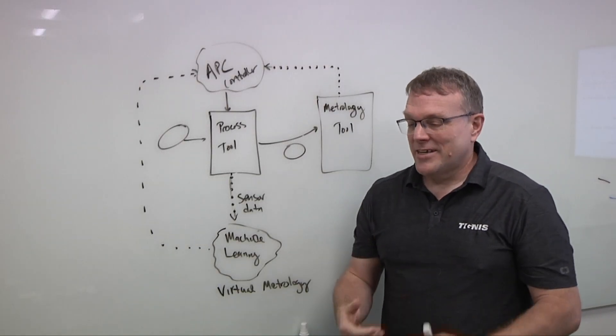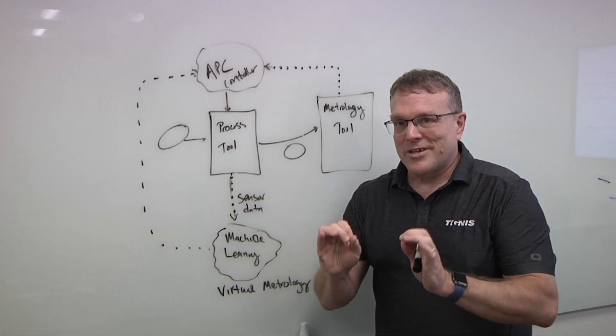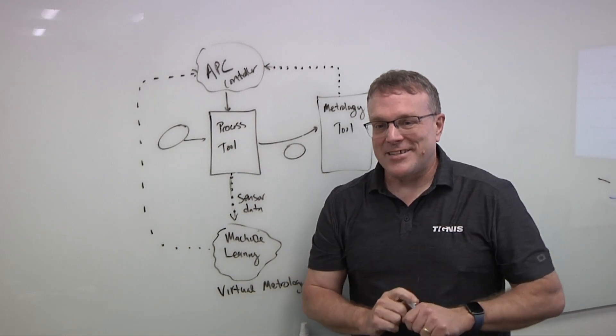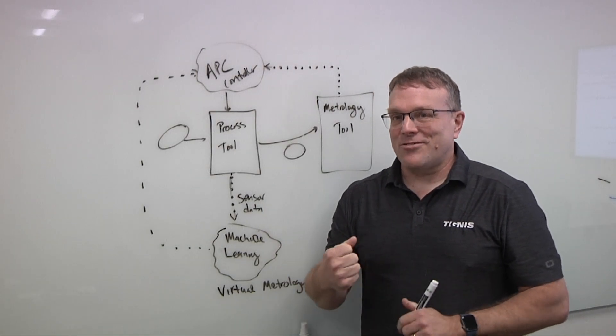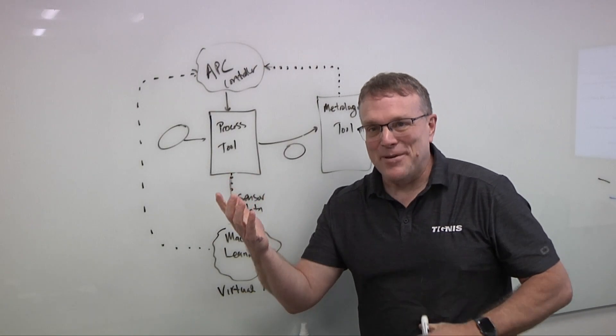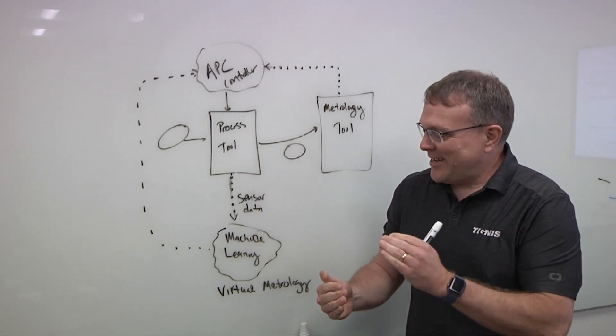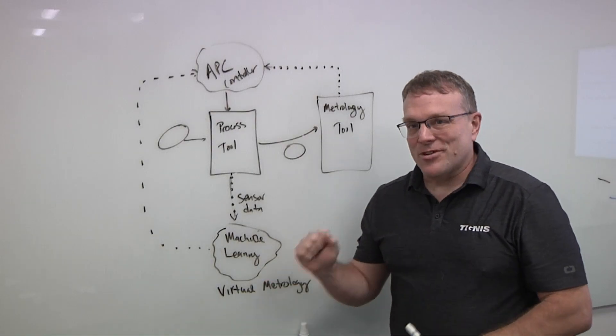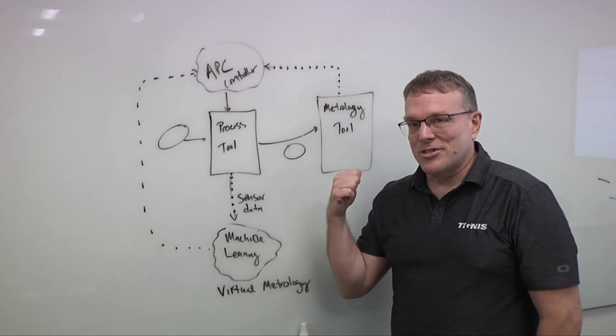But let's talk about this dream. The reality is, I think I told you before that machine learning is great about predicting future states that look like past states. But the reality is we use metrology to detect things we didn't think were going to happen in many cases. And so I don't know that virtual metrology is ever going to be sufficiently accurate enough to fully replace a metrology tool.